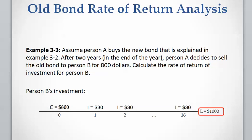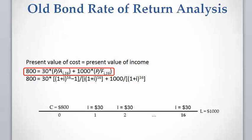Please note that Person B is buying the bond at $800 but is going to receive the face value of the bond at the end of the maturity date. We write the rate of return equation: present value of cost equals present value of income. The cost is $800, and Person B is going to receive 16 payments of $30 every six months and $1,000 at the end of the 16th period.